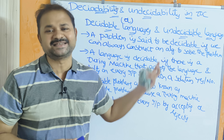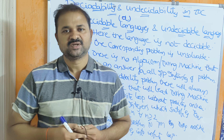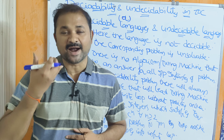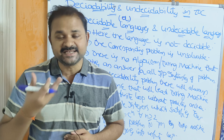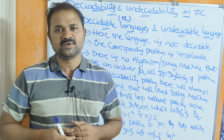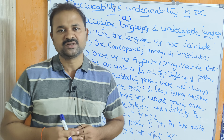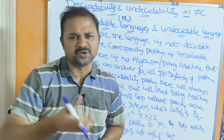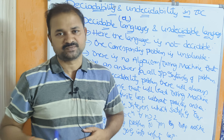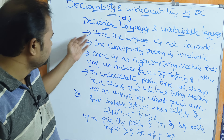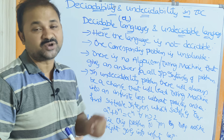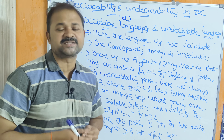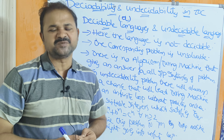Now let us discuss undecidability. The name itself specifies the meaning — the problem is undecidable, the language is undecidable. There is no algorithm or no Turing machine to solve that problem. Undecidable means the language is not decidable, and the corresponding problem is unsolvable — it is not possible to solve that problem.